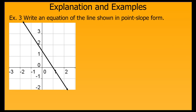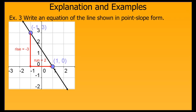Let's look at another example. This time, they give us the graph of the line and ask us to write an equation in point-slope form. First, we want to pick an easy point to work with, perhaps negative 1 comma 3. Then we pick another easy point to help us figure out our rise over run, our slope. I picked 1 comma 0.